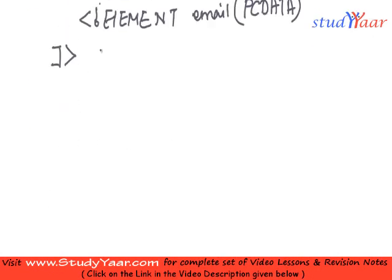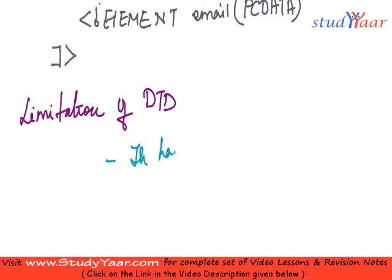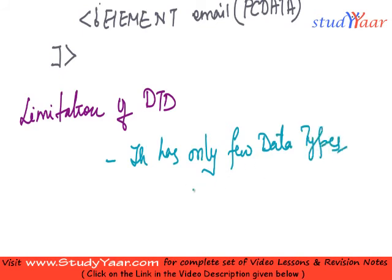Now let's see what are the limitations of a DTD schema. The first limitation is it has only few data types - no specialized data types. It only has PCDATA.